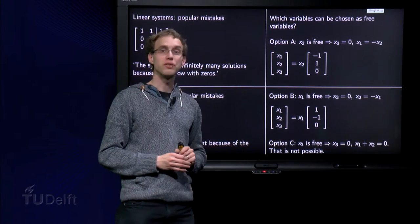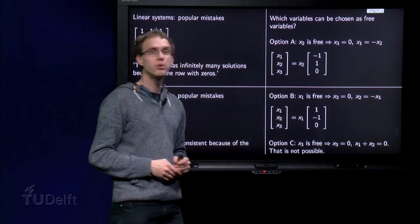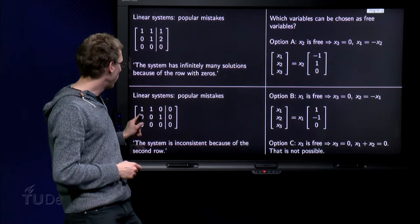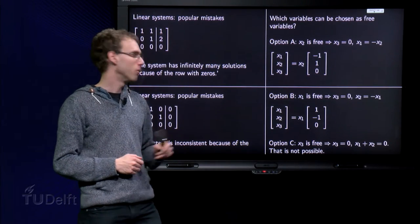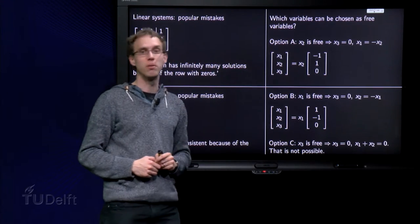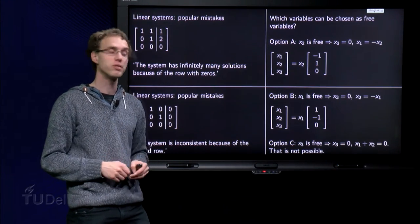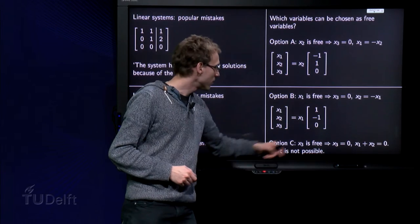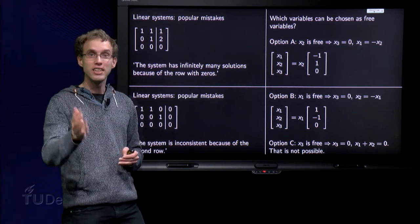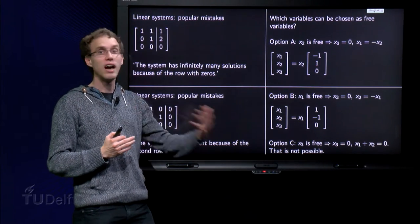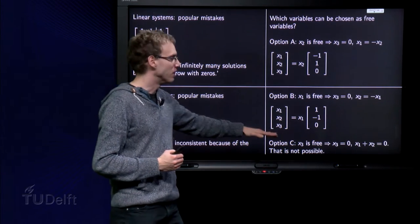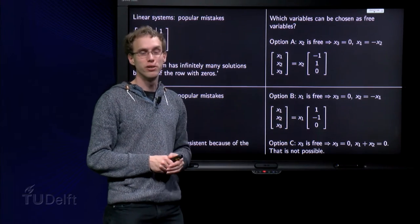Now let's look at the last one. Can we choose x3 to be free? Well, from this second row we also get x3 equals 0, and then the first row would give us x1 plus x2 equals 0. But x3 is free, and x3 equals 0, we cannot have both at once, so that means that this choice in this case is not possible.